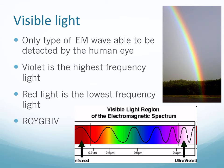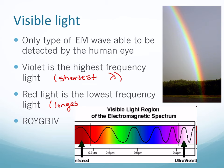Visible light is the only type of electromagnetic radiation detectable by the human eye — we can see the colors of the rainbow and nothing else. Violet is the highest frequency of visible light with the shortest wavelength; red light is the lowest frequency with the longest wavelength. Remember ROYGBIV: red is on the long-wavelength side, violet on the short-wavelength side.